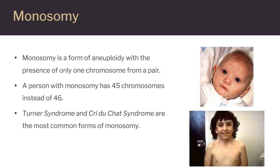Another example of monosomy is Cri-du-chat syndrome — French for 'cry of the cat,' named after the person's malformed larynx — a partial monosomy caused by a deletion of the end of the short arm of chromosome 5.